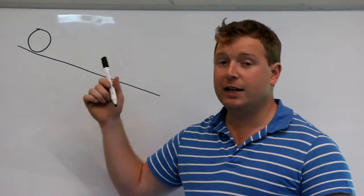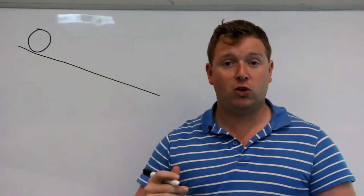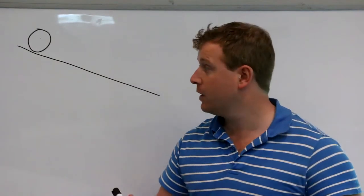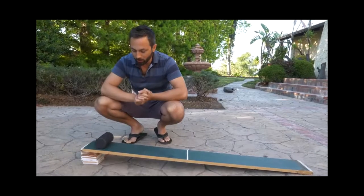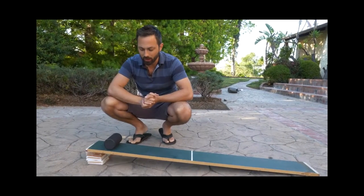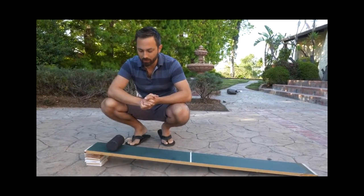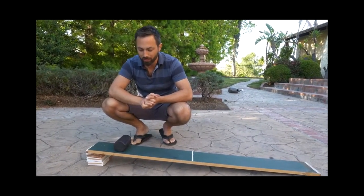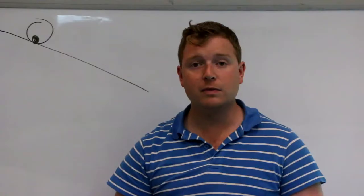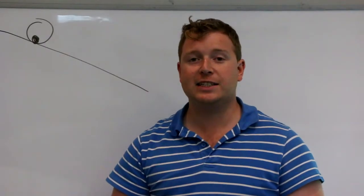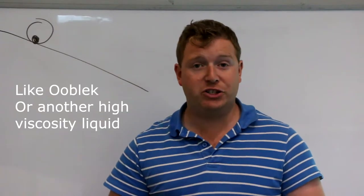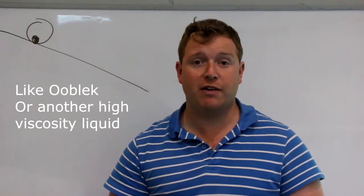On an inclined plane, it starts to roll, stops again, and then starts periodically. We will see that it rolls, then it stops, then it rolls, then it stops. My theory is the cylinder has something inside it that is moving around, changing the centre of gravity.